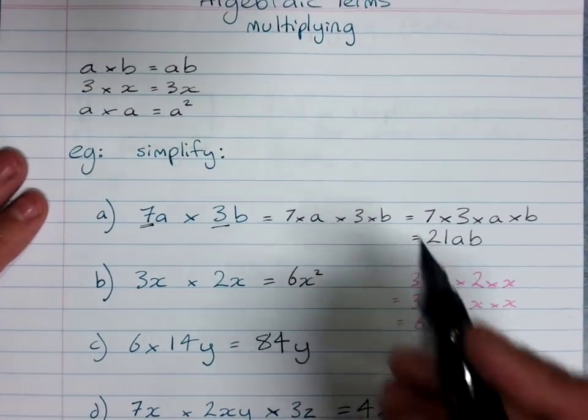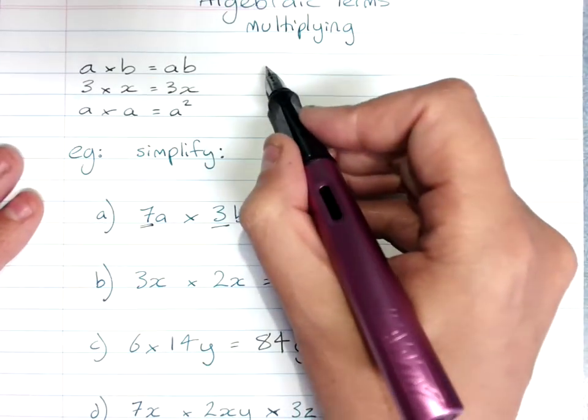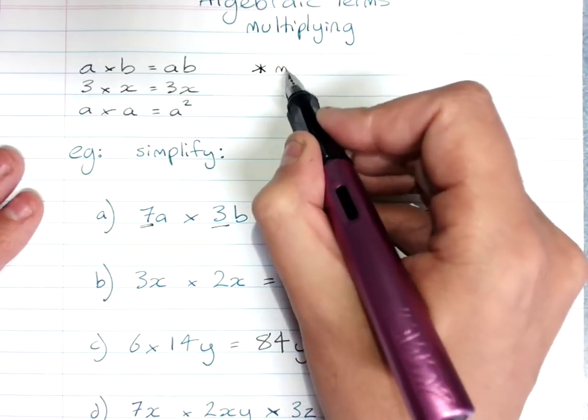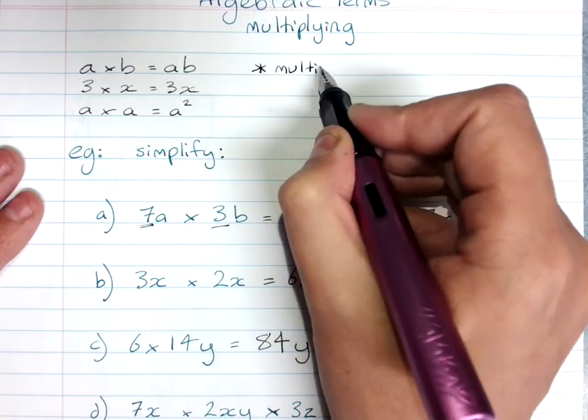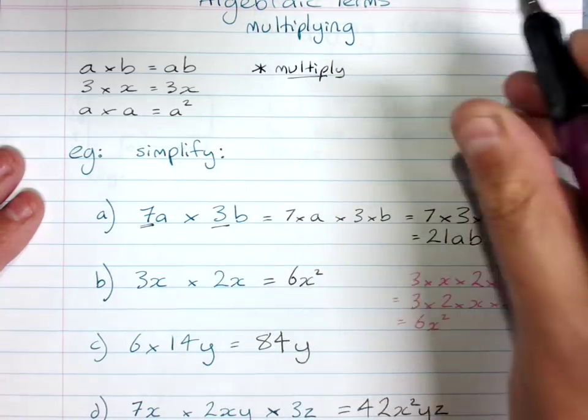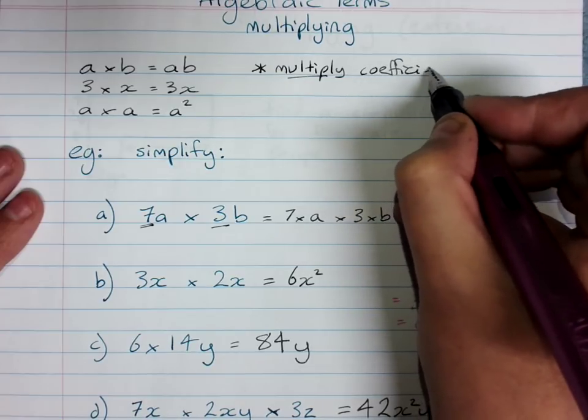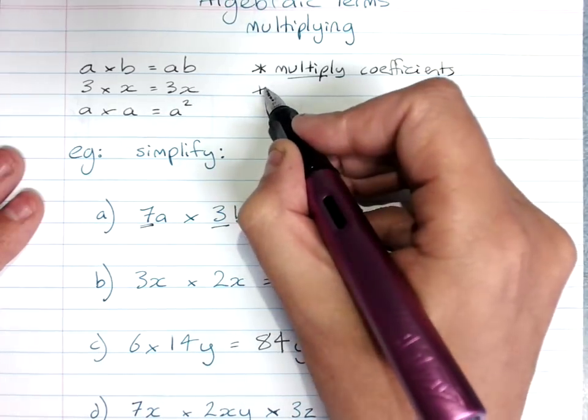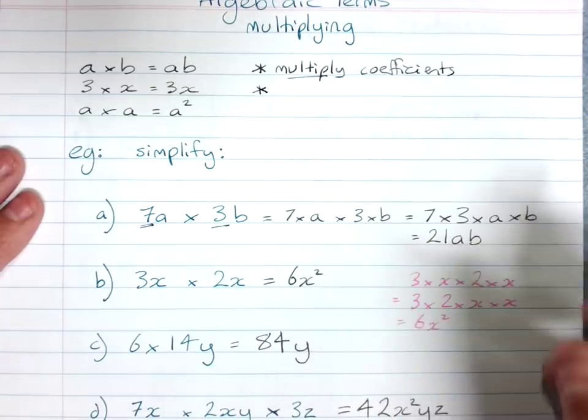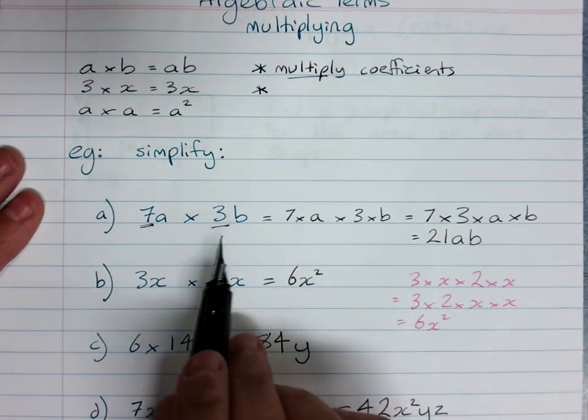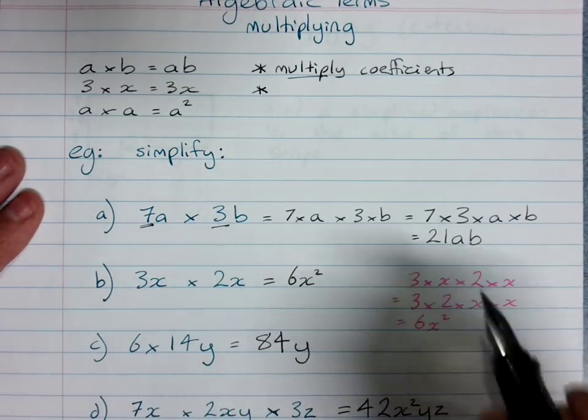So the rules for multiplying algebraic terms: multiply the coefficients and then we multiply the pronumerals just by writing them with the correct notation.